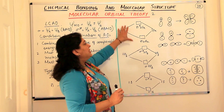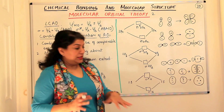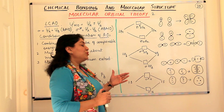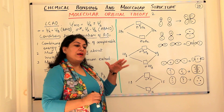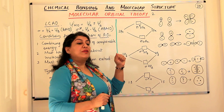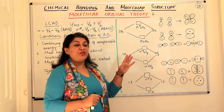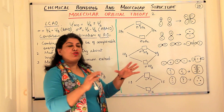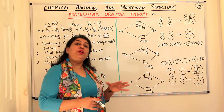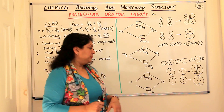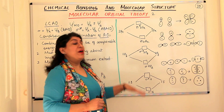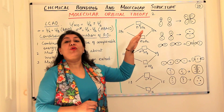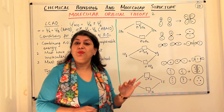Now, these are the different types of orbitals that would be formed. Just like we use the Pauli exclusion principle, the Aufbau principle, and Hund's rule of maximum multiplicity to write down the electronic configuration of atoms, in the same manner, we have energy level diagrams for the molecular orbitals too.